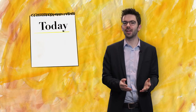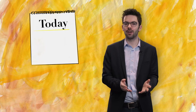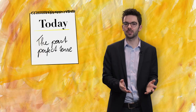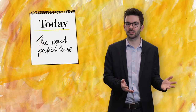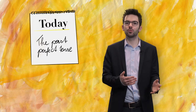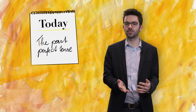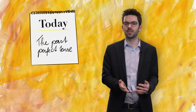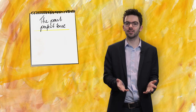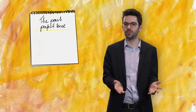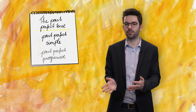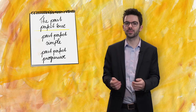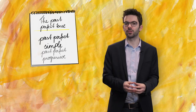Hello and welcome to Tenses Explained. Today we're going to have a look at the past perfect tense, which we need when we want to talk about an earlier past. As with all the other tenses we have discussed so far, the past perfect tense can be divided into two basic forms: the past perfect simple and the past perfect progressive. Let's have a look at the simple form first.